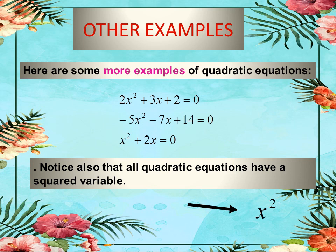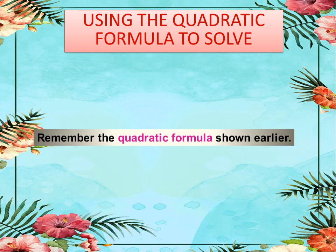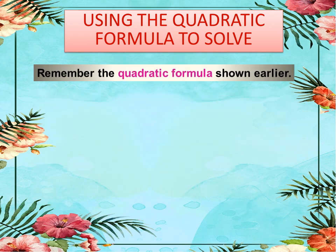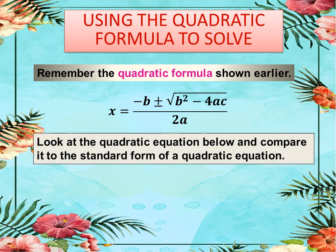The x² term is essential for your quadratic equation. Now we will learn how to use the quadratic formula for finding solutions. Remember the quadratic formula: x = (−b ± √(b² − 4ac)) / 2a.